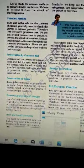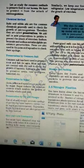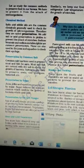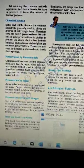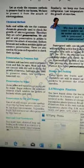The next one is preservation by oil and vinegar. Use of oil and vinegar prevents spoilage of pickles because bacteria cannot live in such an environment. Vegetables, fruits, fish and meat are often preserved by this method.